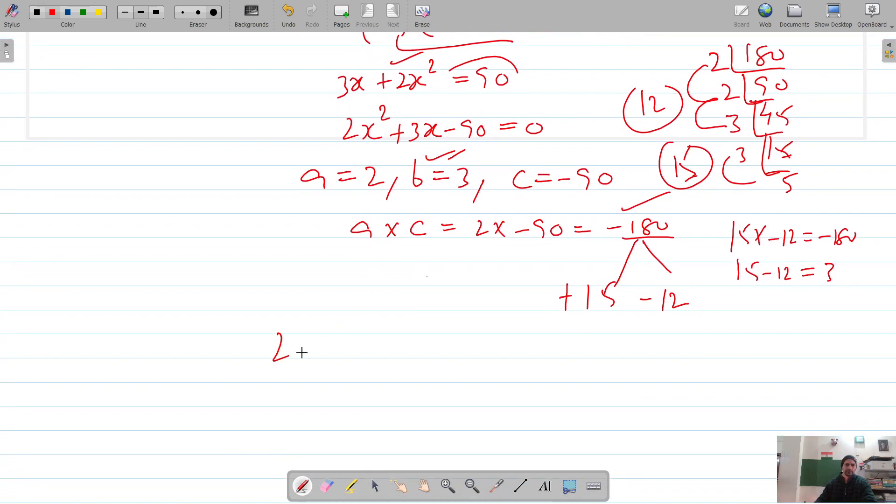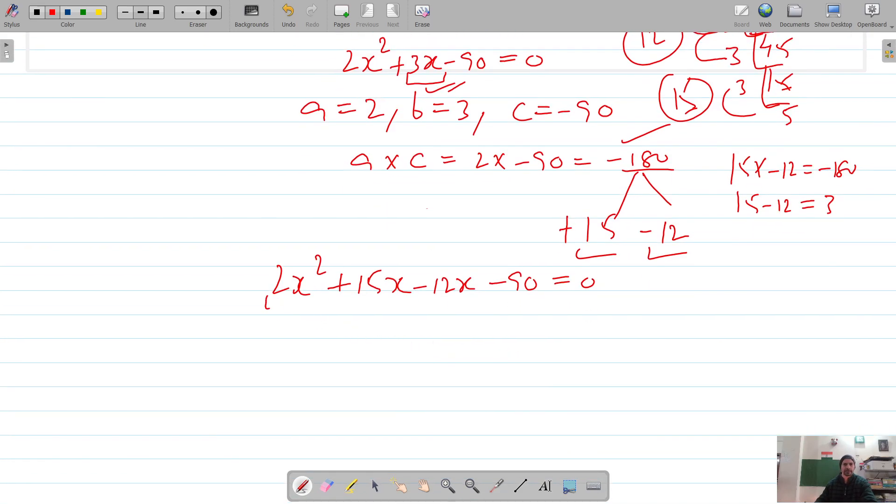Instead of 3x, I will put in 15x minus 12x, because 15x minus 12x is 3x. So we have 2x squared plus 15x minus 12x minus 90 equals zero. For these, common is x, and it's 2x plus 15.